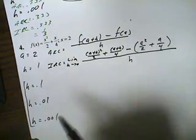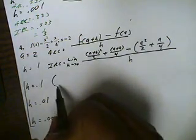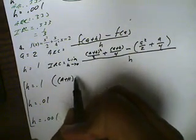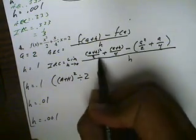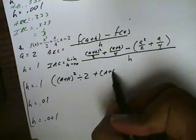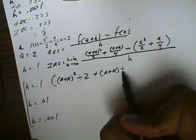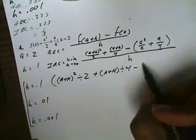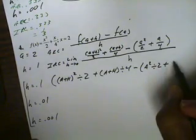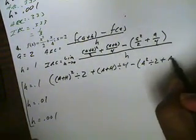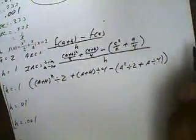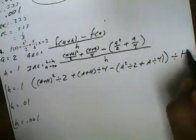Now we get this into the calculator. Open an overall parenthesis, then a parenthesis for alpha A plus alpha H, close parenthesis, square that, division 2, plus open parenthesis, alpha A plus alpha H, close parenthesis, divide by 4. Subtract, open parenthesis, alpha A squared division 2 plus alpha A division 4, close parenthesis. Close the entire numerator, then divide all by alpha H.